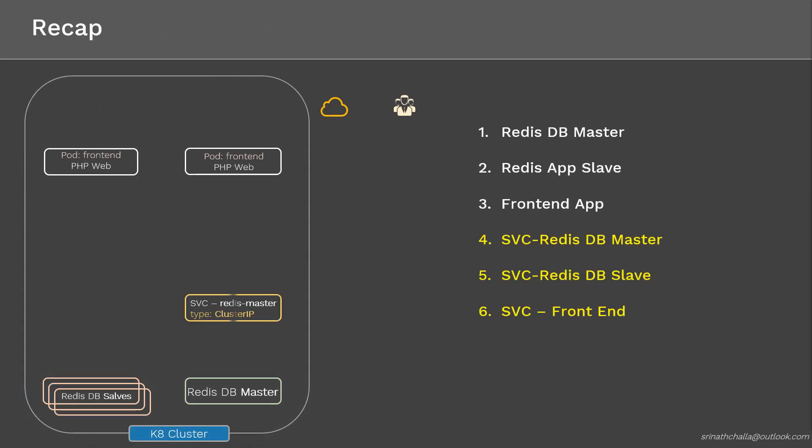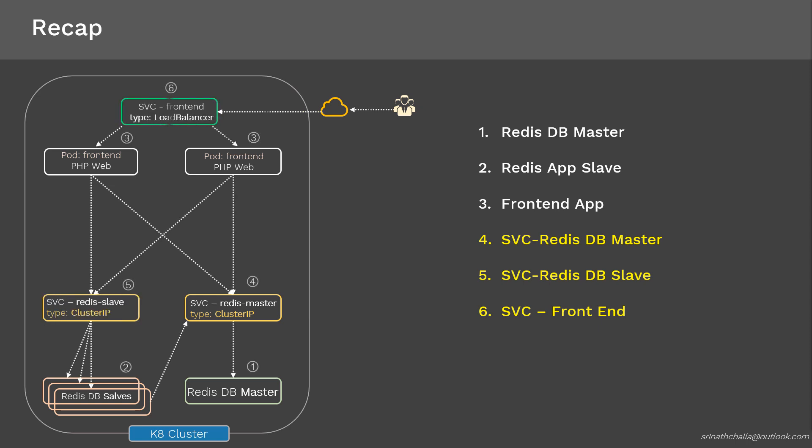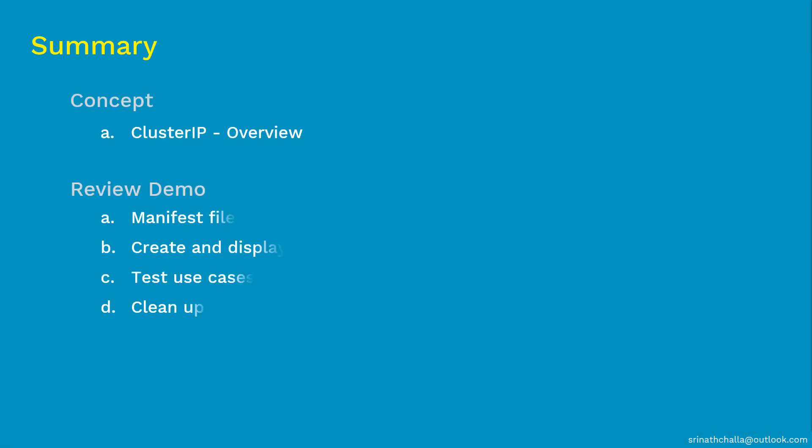If we recap everything so far: we created three deployments and three services required to deploy the guestbook app, and tested to make sure the setup is working successfully. Coming to the summary — in Part 1 we discussed ClusterIP: the ClusterIP service exposes the service only within the Kubernetes cluster and is the default service type in Kubernetes. In Part 2 we reviewed the demo: we deployed the guestbook app using three deployments and two service types — ClusterIP to connect the front-end app to the back-end database, and LoadBalancer to expose the front-end app to the internet.